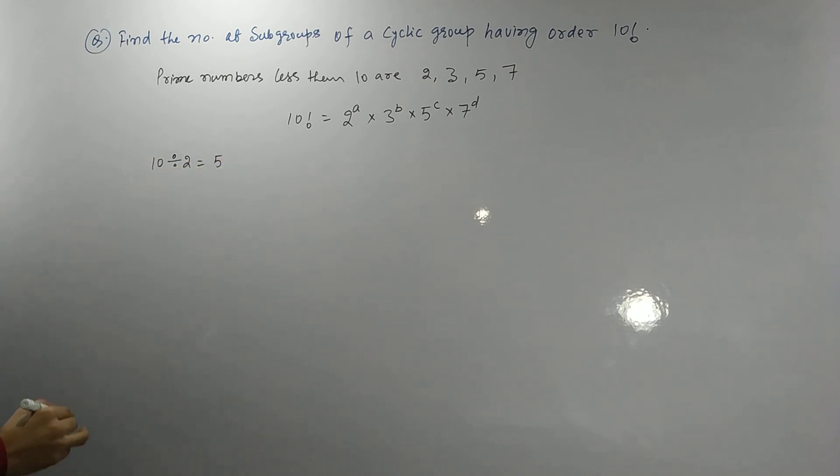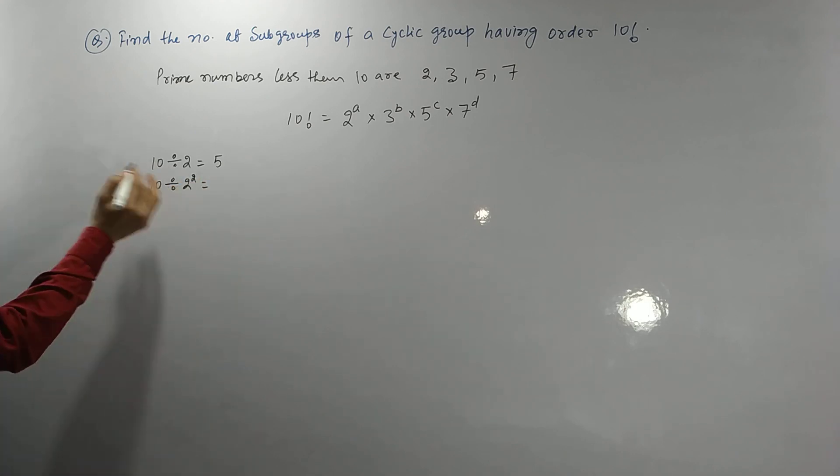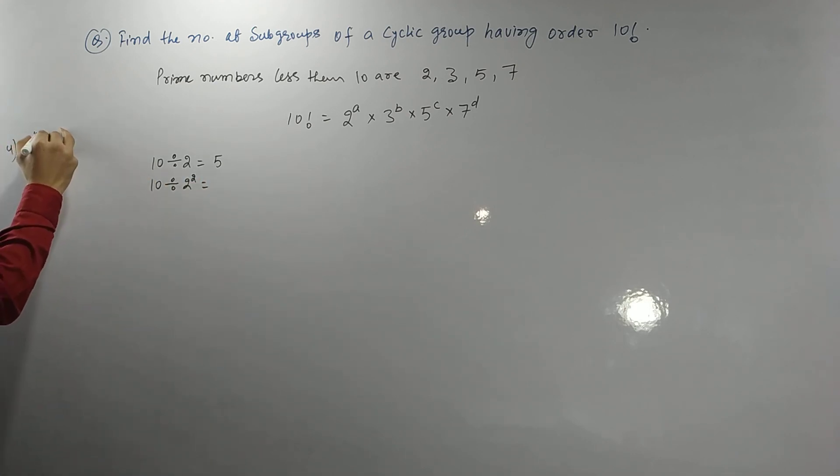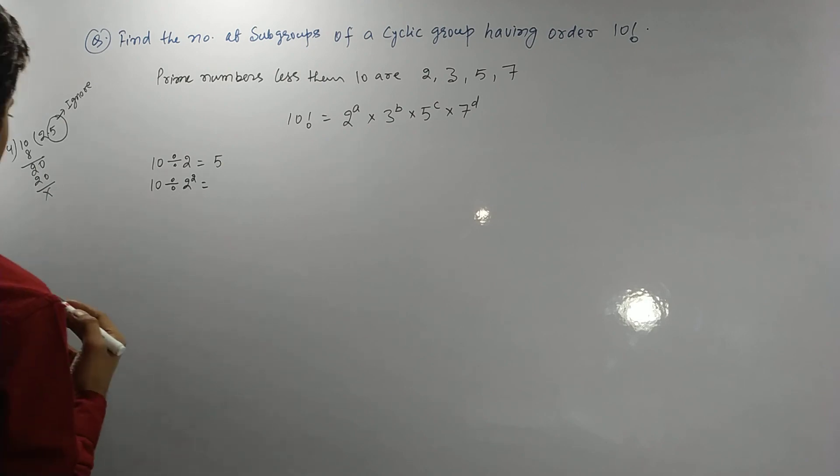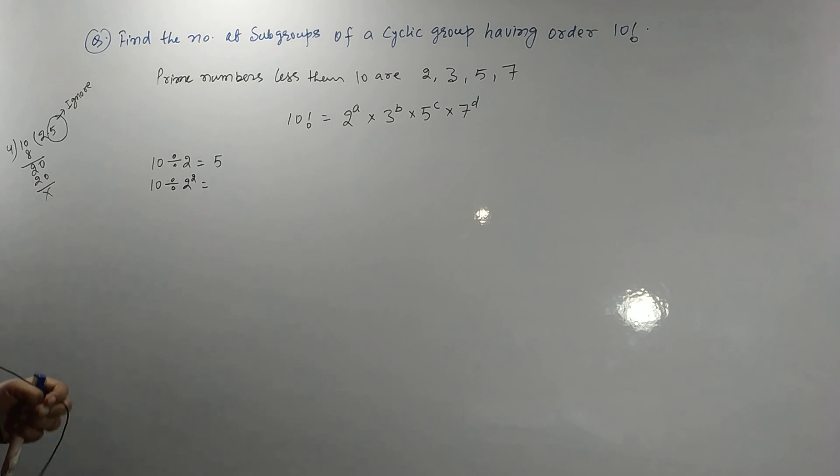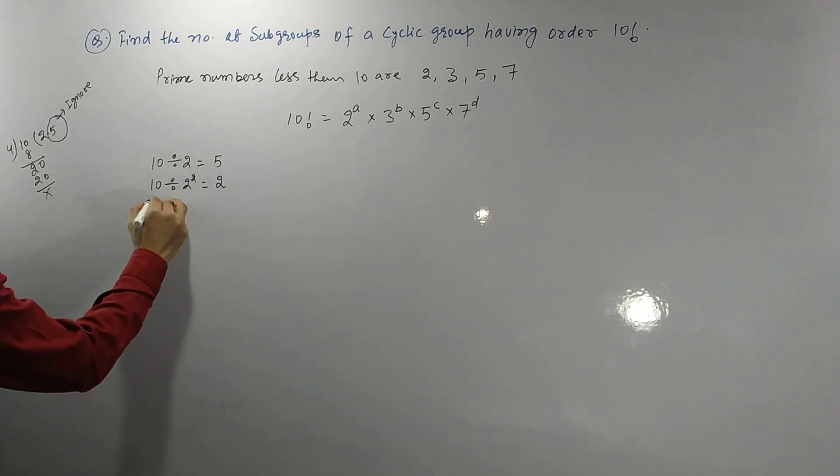Again, divide 10 by 2 to the power 2, so divide 10 by 4. You are getting 2.5, but ignore what comes after the decimal. We are interested with 2 only. Again, 10 divided by 2 to the power 3, which is 8, gives 1.25. We will ignore whatever is after the decimal - just 1.